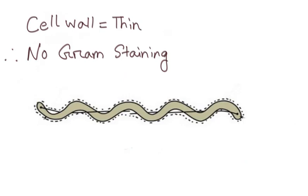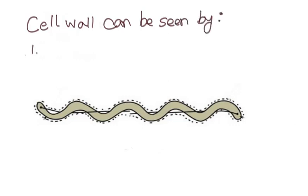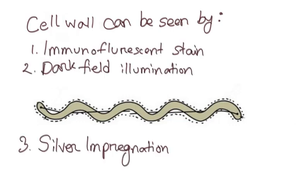As the cell wall is thin, they cannot be stained with Gram staining. They can be seen by using special techniques like immunofluorescent stain, dark field illumination, and silver impregnation method.